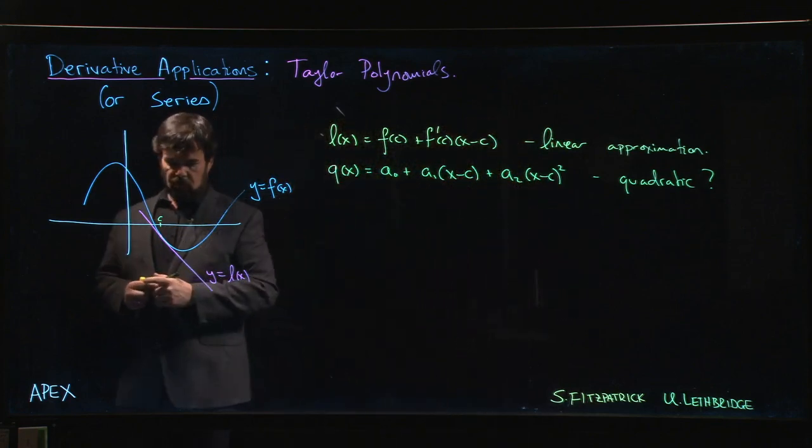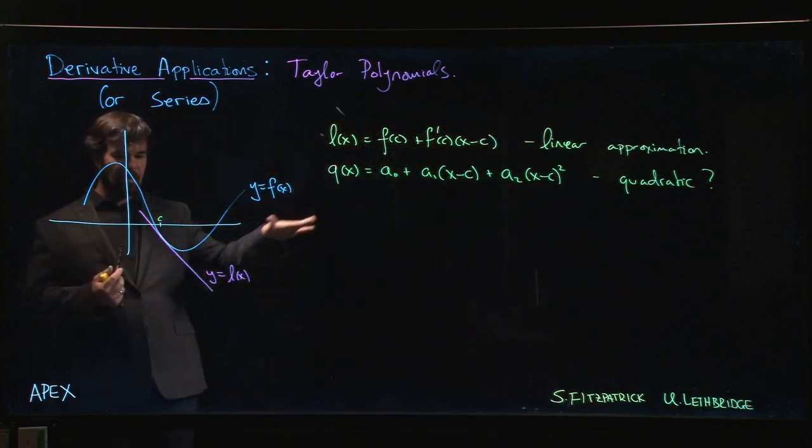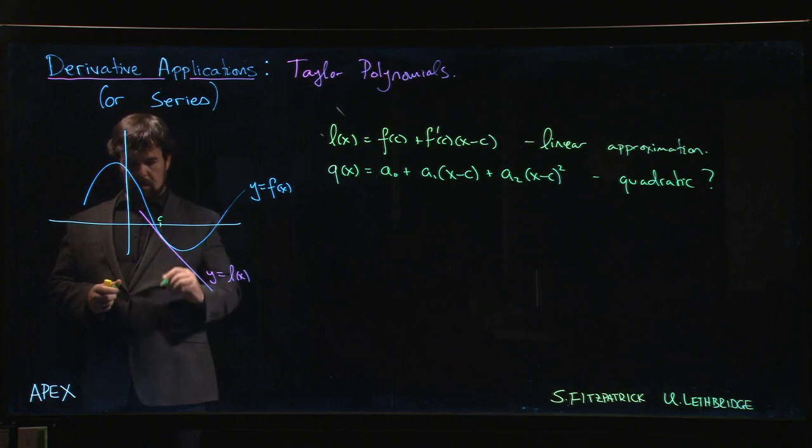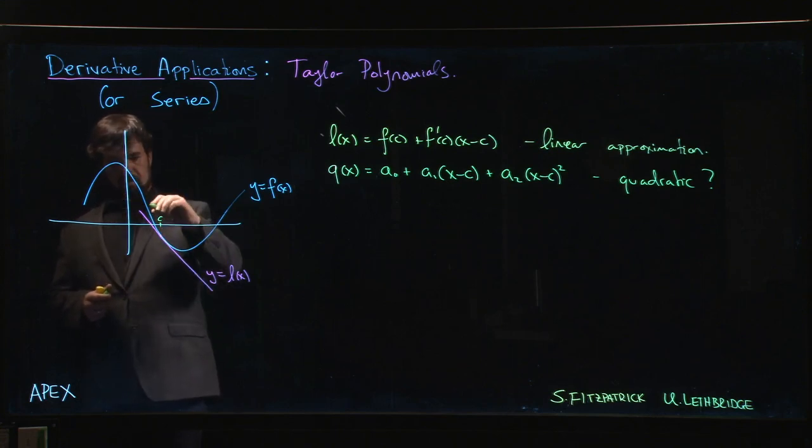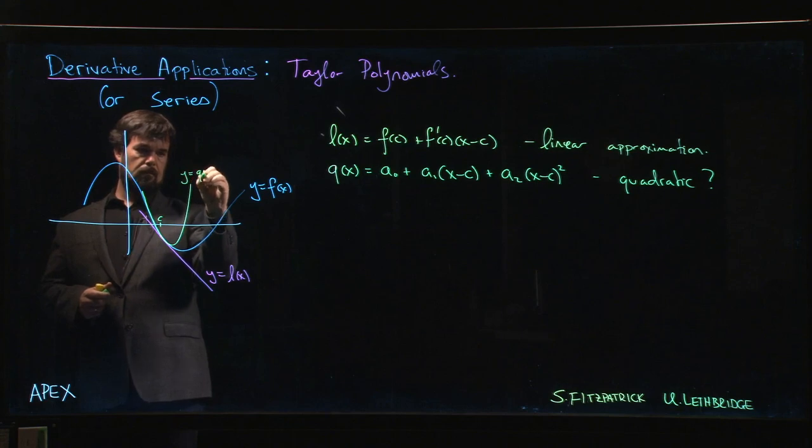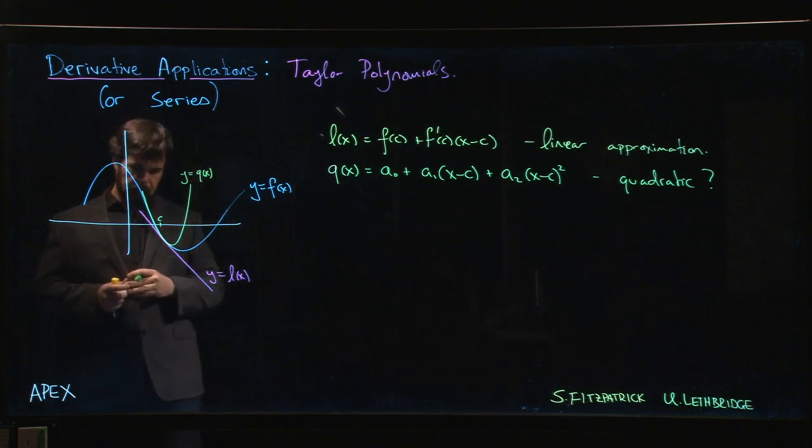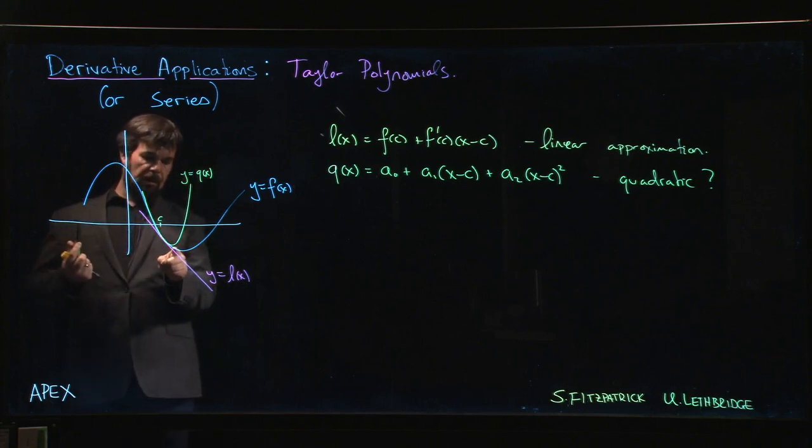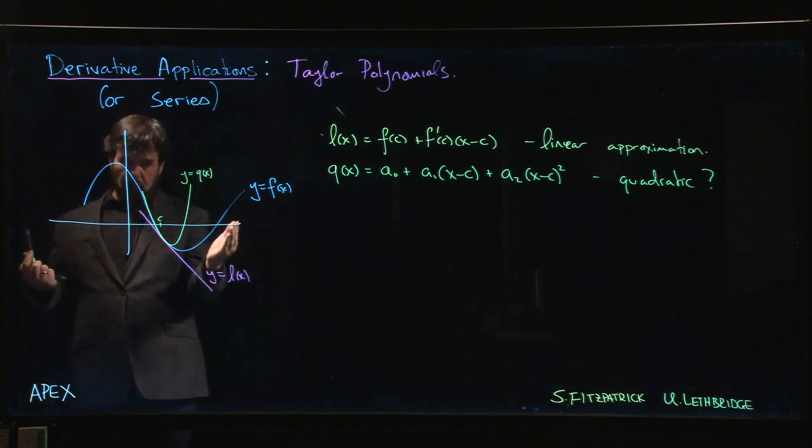Of course, adding on that second order term gives some curvature. We know the second derivative is where you start curving away from just being a line. So maybe this quadratic does something like this. You get a better approximation for a larger range of x values. That's what we're hoping for.